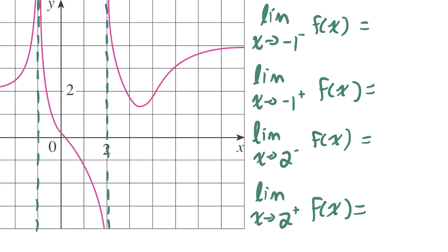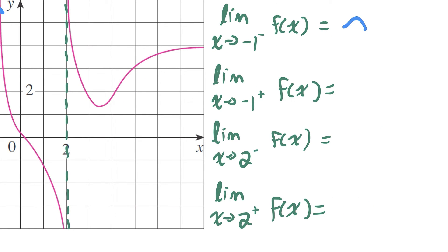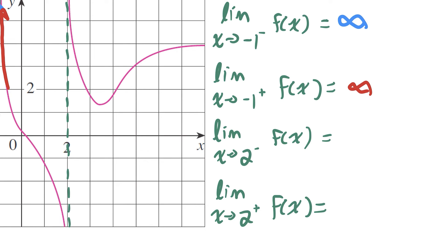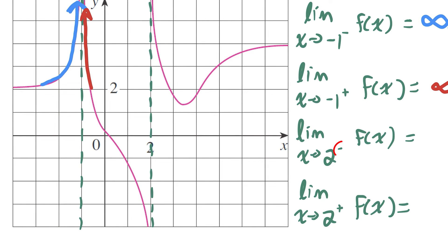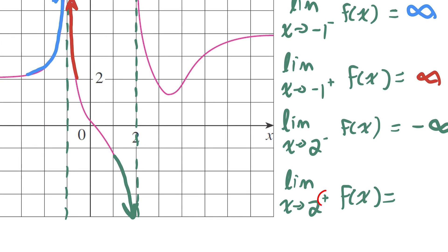As x approaches negative one from the left, the y values are going infinitely high, so that limit equals infinity. Approaching negative one from the right, it's also going towards infinity. As x approaches two from the left, the function goes down towards negative infinity. And approaching two from the right, the function goes up to positive infinity. Those are all the infinite limits.